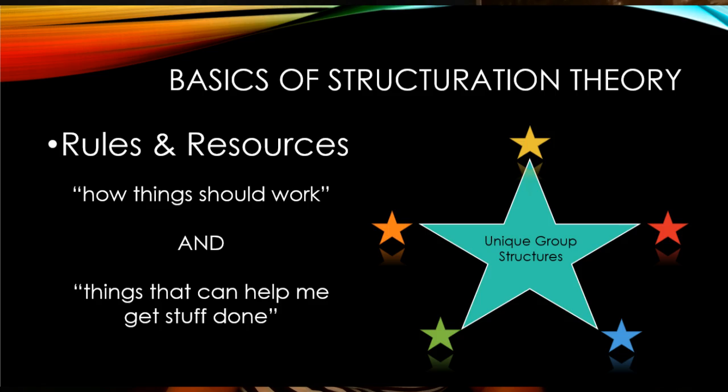As you can see from the slide, each one of those small stars can represent a person in a group — in this case, a small group of five. But each one of those people, if they were to come together into a new group, each one of them understands different rules for how they should behave in this new group, and each of them also has different resources.